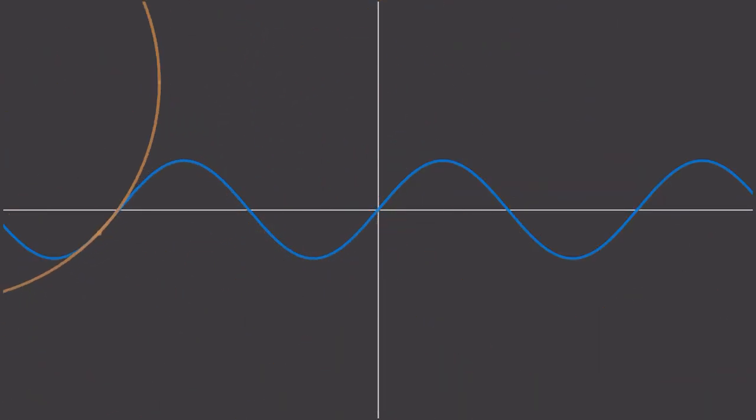And there we have it. We can approximate the curve at any point by a circle of radius r. We've done it.